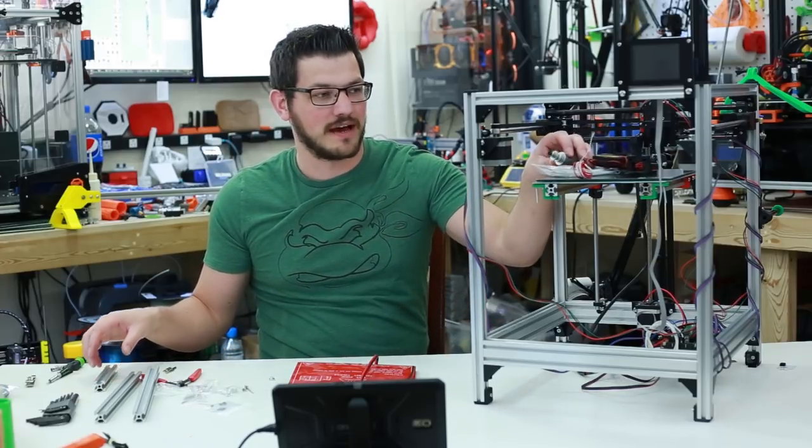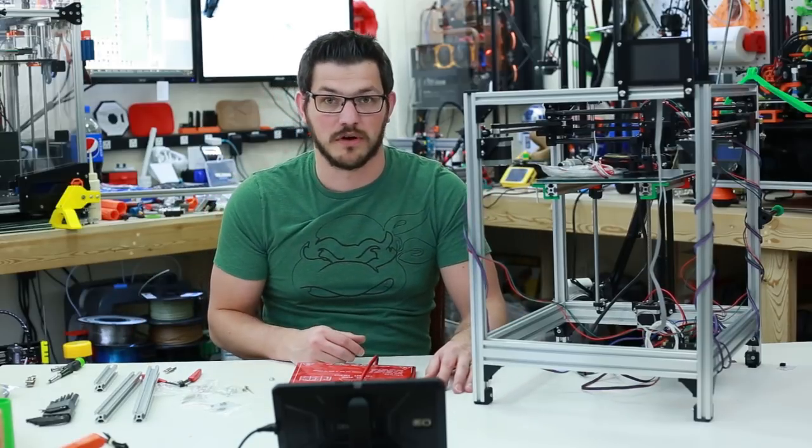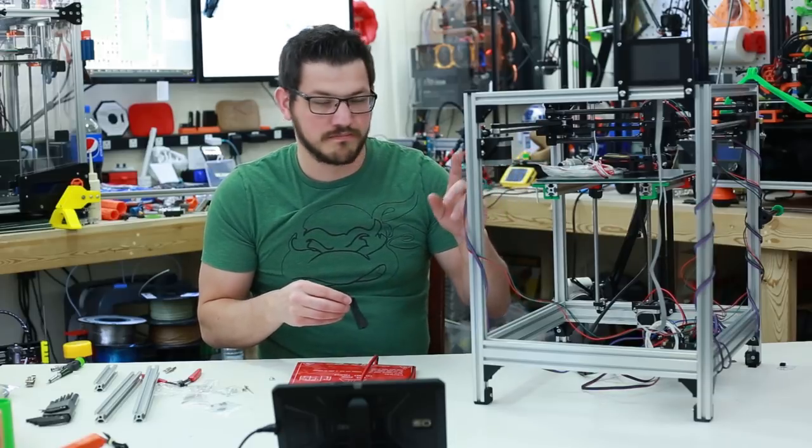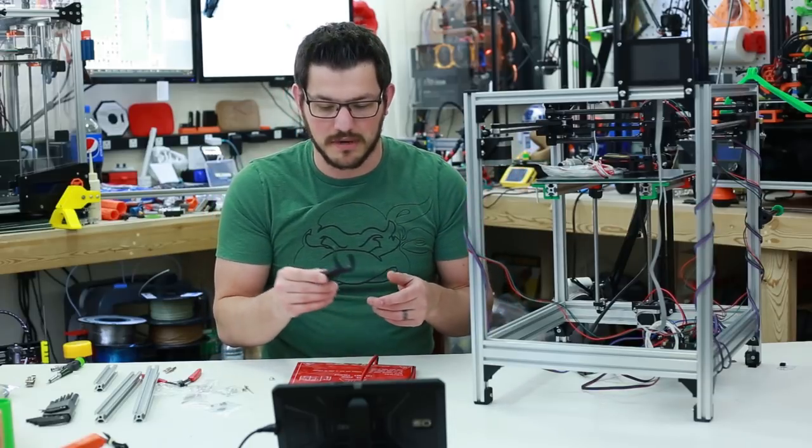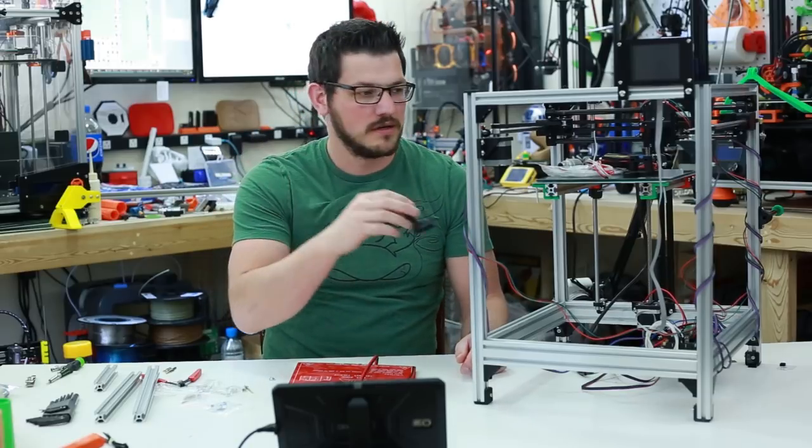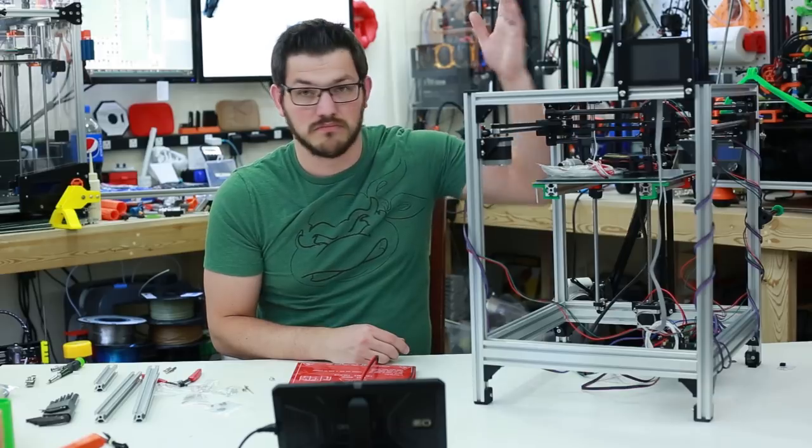And then we're going to go ahead and install the extruder, so I have here an E3D clone that we're going to be using for now, I'll probably end up putting a legit one on there later. I have two different, the stock part cooling fan that Tech2C made and then I found this one which covers about 270 degrees around the nozzle.